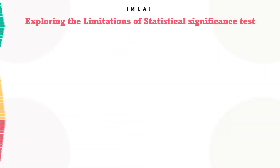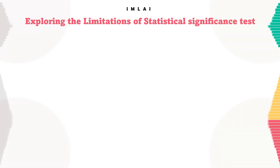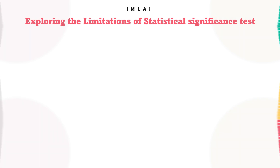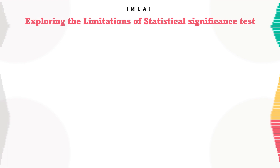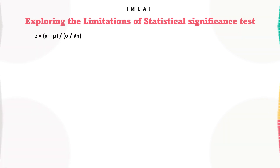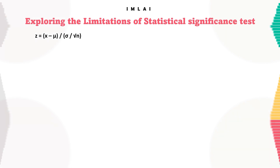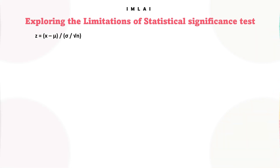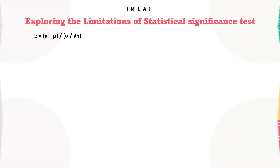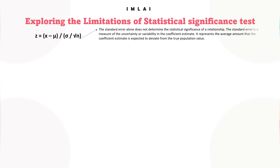To explore the limitations of the statistical significance test, let's have a quick look at how we perform it. We use a z-statistic, which is related to the sampling distribution, and it consists of two terms.